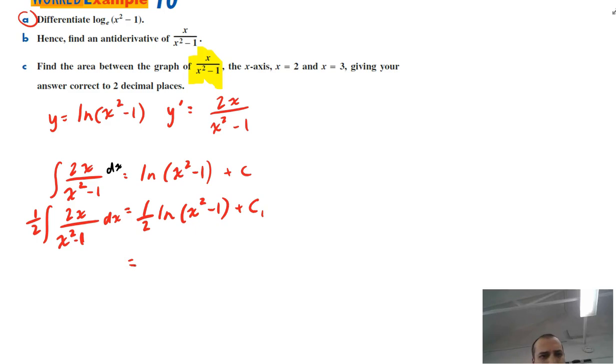Okay, we're really done here, we're just saying now that the integral of x over x squared minus 1 with respect to x is equal to half ln x squared minus 1 plus some c value. So we've done that now.